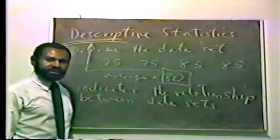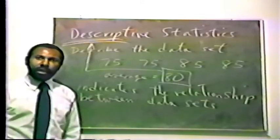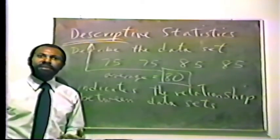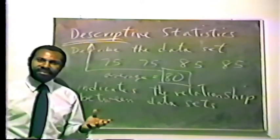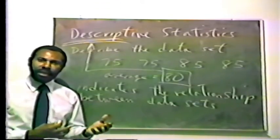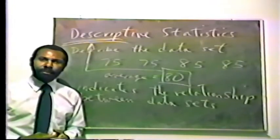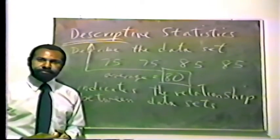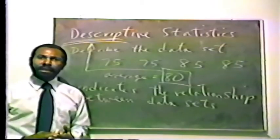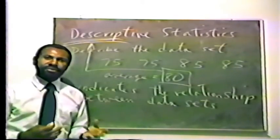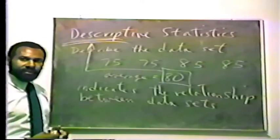We can also use descriptive statistics to indicate the relationship between various sets. For example, we might talk about cigarette smoking and counseling — there's a relationship between those variables, and there's a statistic we can use to describe it. Similarly, we can describe the relationship between a political party and whether or not a person votes.